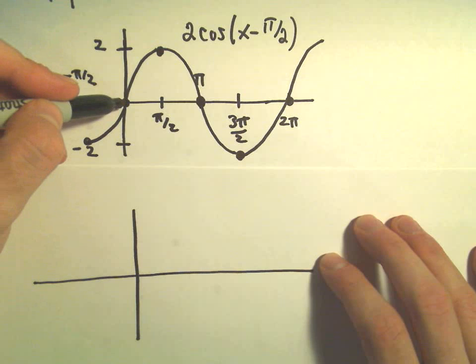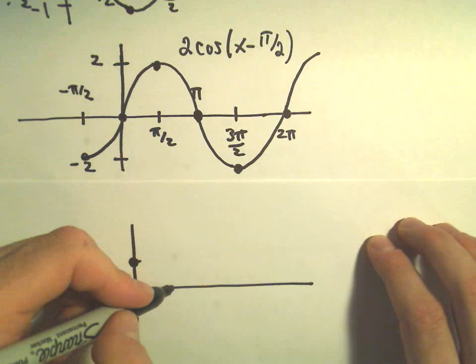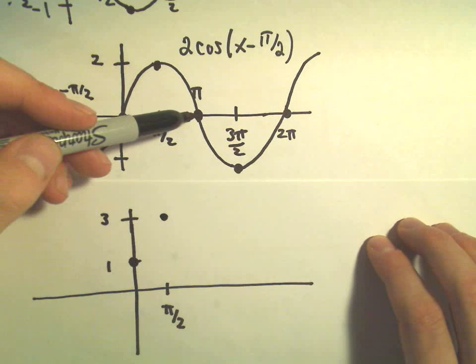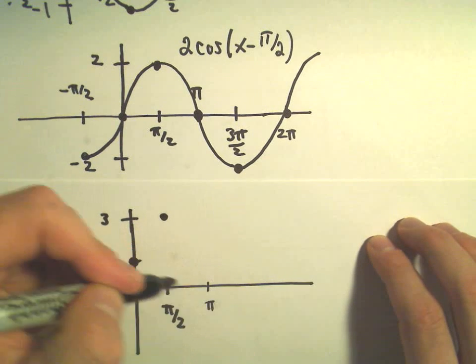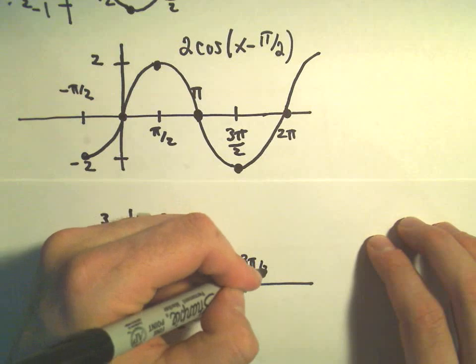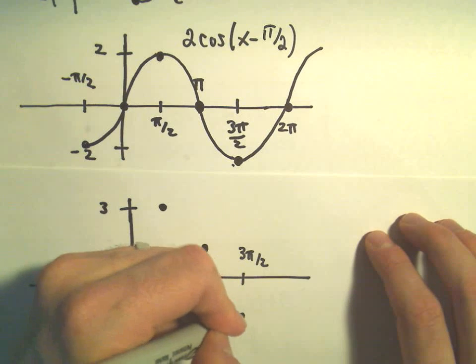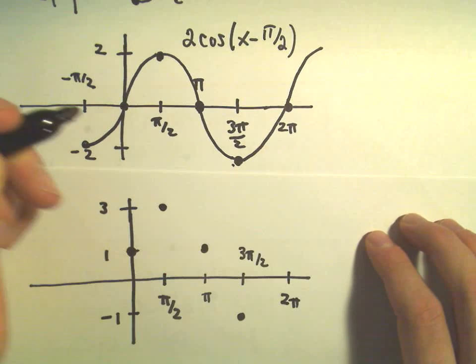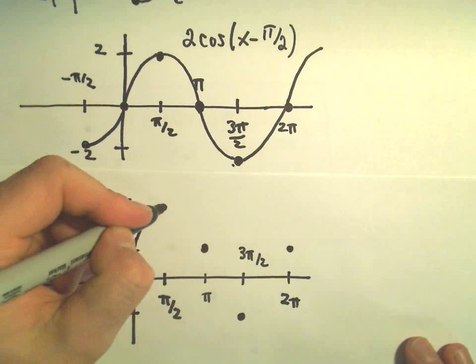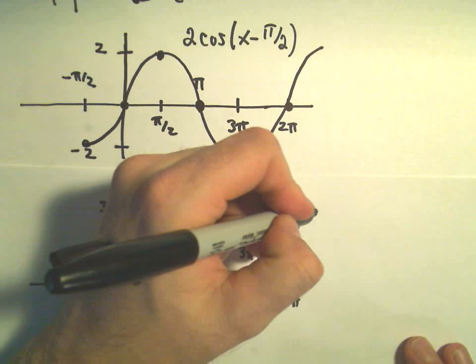Instead of being at 0, 0, we'll now be at 0, 1. Instead of being at pi over 2, 2, we'll now be up here at pi over 2, 3. Instead of being at pi, 0, we'll now be at pi, 1. At 3 pi over 2, instead of being at the y value of negative 2, we'll now be at the y value of negative 1. And then when we're back at 2 pi, instead of being at 0, since we've added 1, we'll now be one unit higher. So now we've got that same graph that we had before, it's just that things have been shifted up one unit.